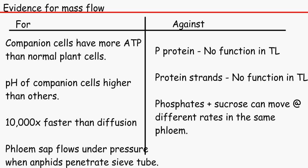And the reasons they had against it is that it's got a P protein and it's got no function in translocation. And they were just wondering why. And neither does the protein strands as well. Like, why does it not have any function in the translocation. And the phosphates and the sucrose moves at different rates in the same phloem. These are the type of things that they had and they were just baffled about to be honest.